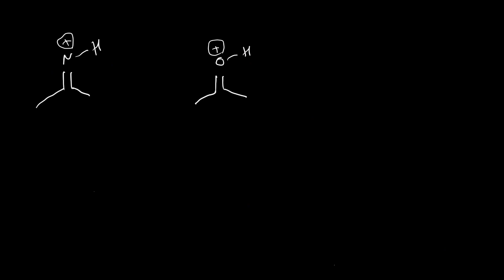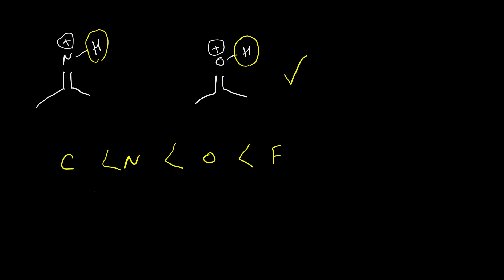Here is the first example — I would like to know which compound is more acidic. In these two molecules, everything is the same except one has nitrogen and the other has oxygen. If we want to deprotonate this hydrogen, we apply the first effect in acidity. In general, oxygen is more electronegative than nitrogen, so the compound with oxygen should be more acidic.